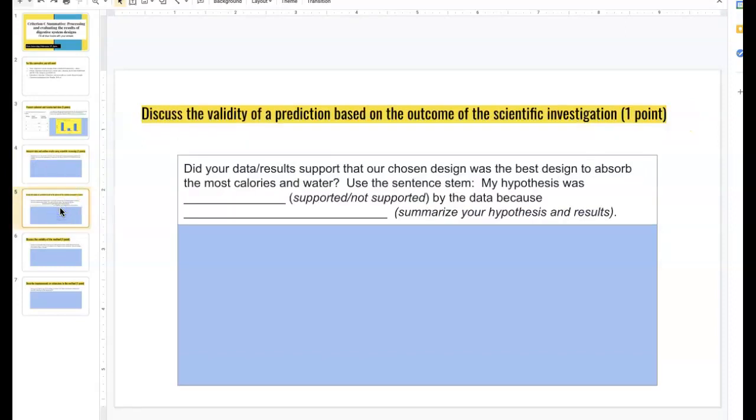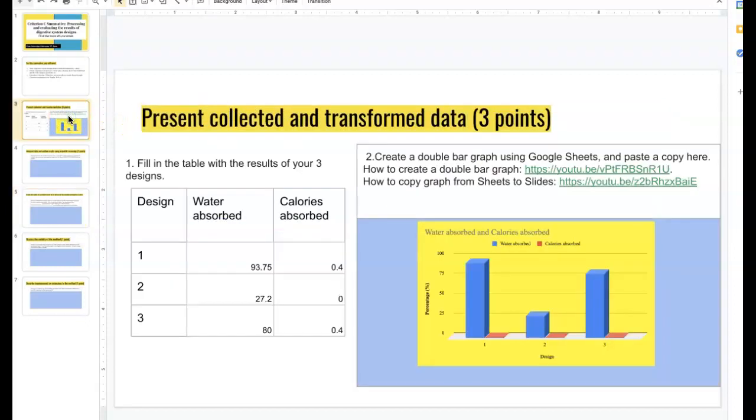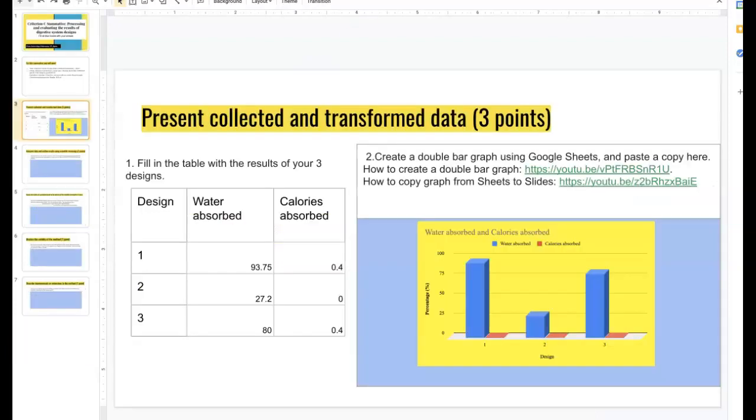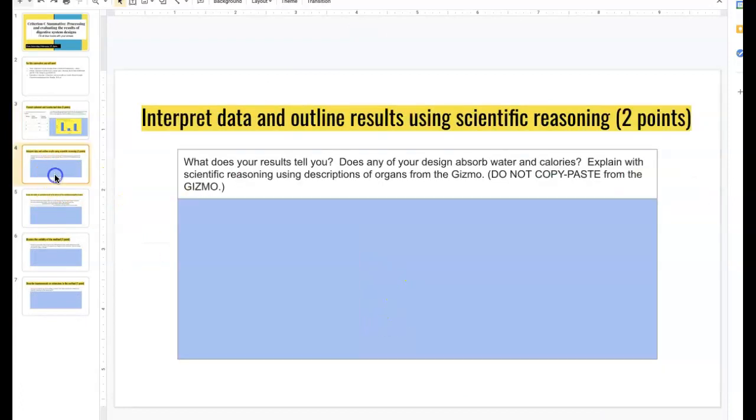Slide 5 is all about how to validate your hypothesis. Use the sentence stem and tell me if your hypothesis was supported or not supported by your data, by your results. These are your results. You chose a design from Criterion B on your hypothesis. You chose a certain design. For this person, this person chose design 1. And now there are results. Here's her design 1. So now you're thinking for slide 5, was my hypothesis supported by my data?